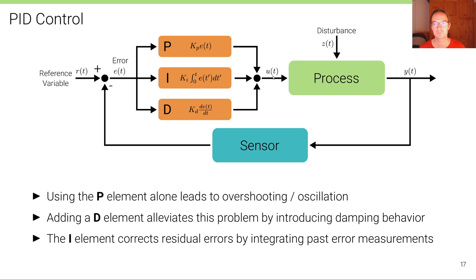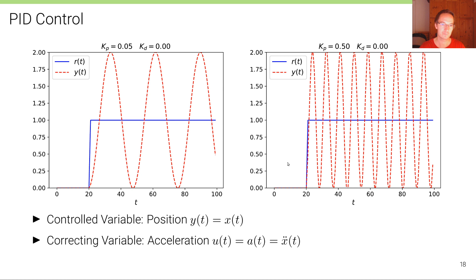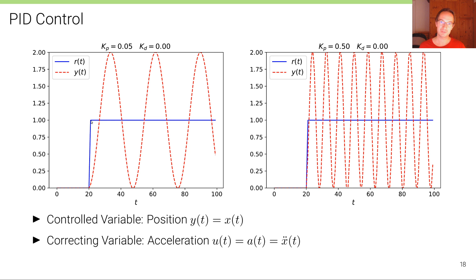Let's assume we want to move this car forward by one meter; the car is currently at position zero. This is shown by the reference value plotted over time in blue. For the first 20 time steps, the vehicle is supposed to be at zero and it is at zero, so the error is zero. But then at time step 20, we ask the vehicle to move to position one — to move one meter forward — giving us the step function here in blue.